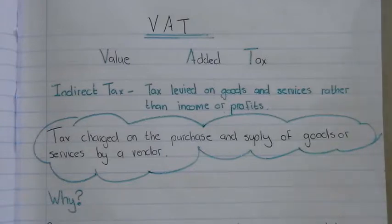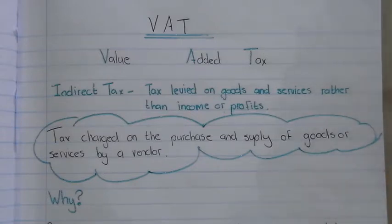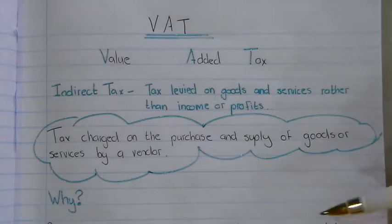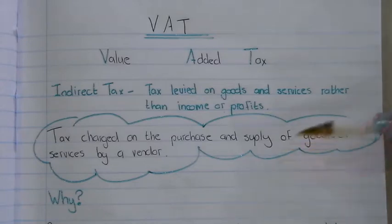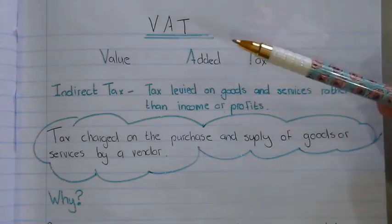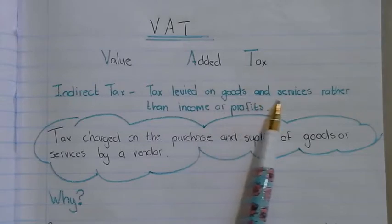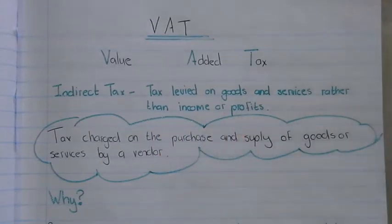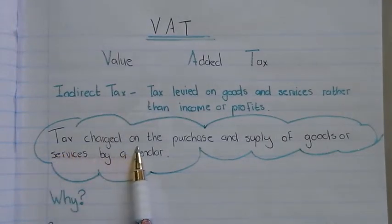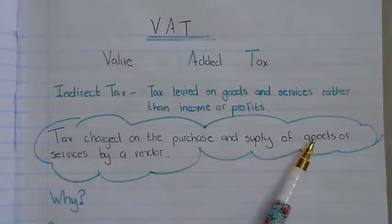This video is about value-added tax. You already learned in grade 8 EMS that there are two different types of revenue the government gets. The one is direct tax, which is calculated on your salary or the profit of a business, and then you get indirect tax. One of the indirect tax items is value-added tax — a tax levied on goods and services rather than income or profit.